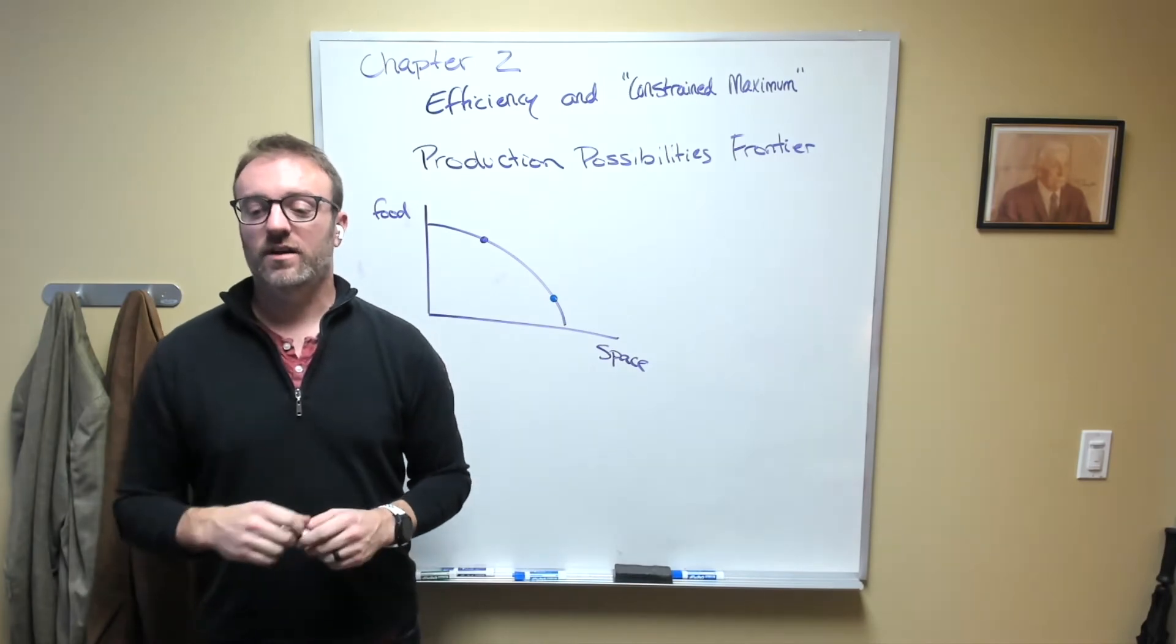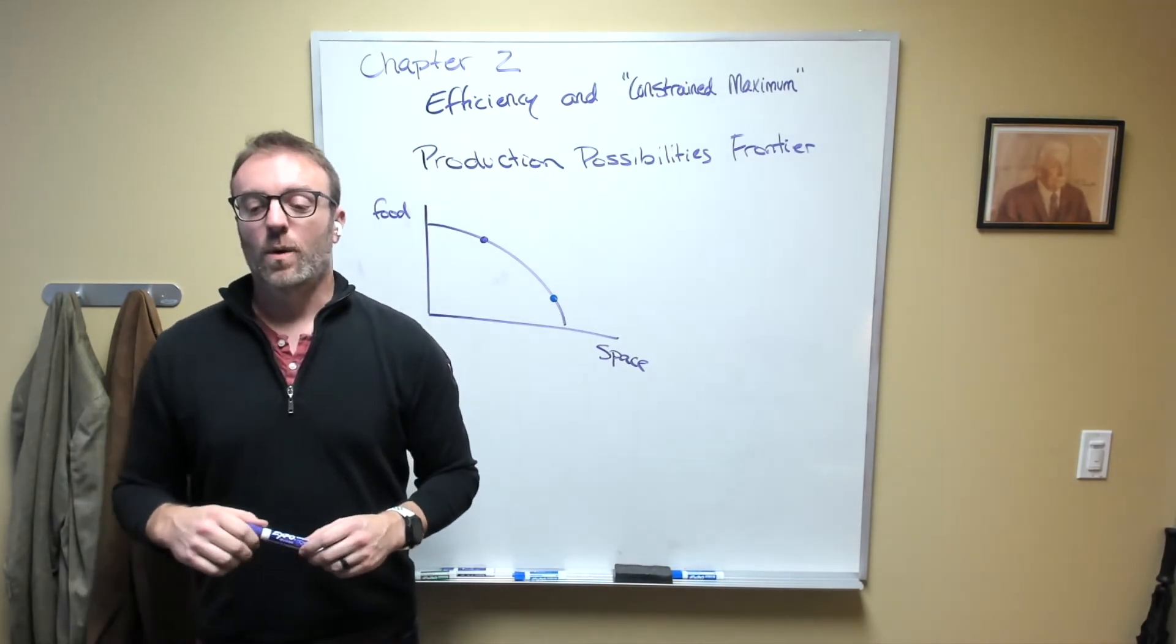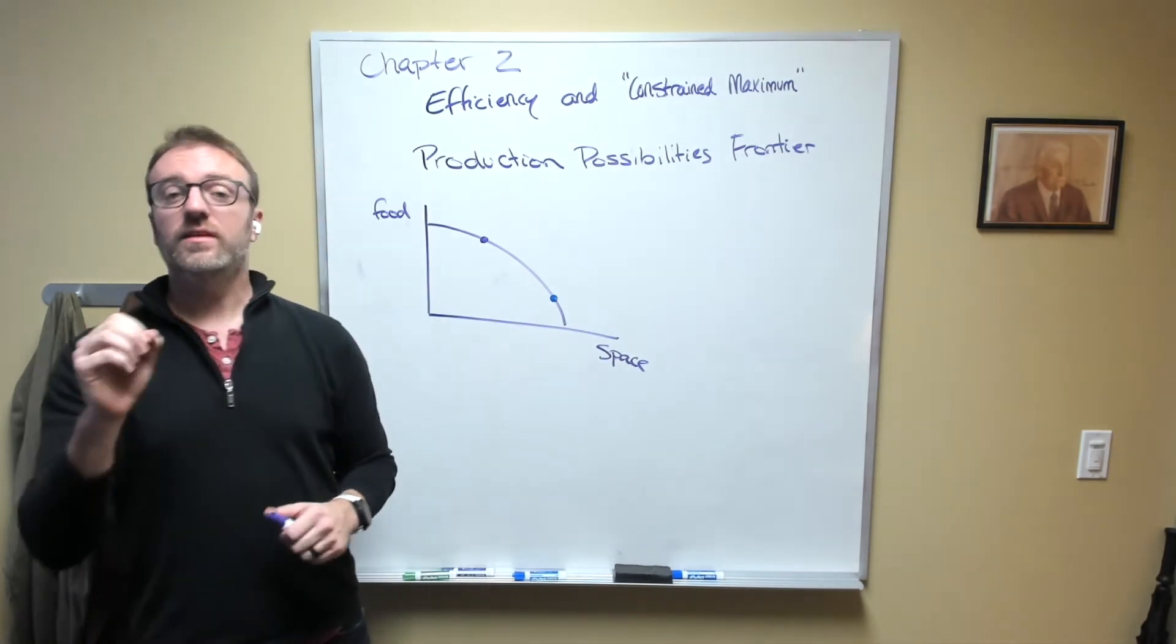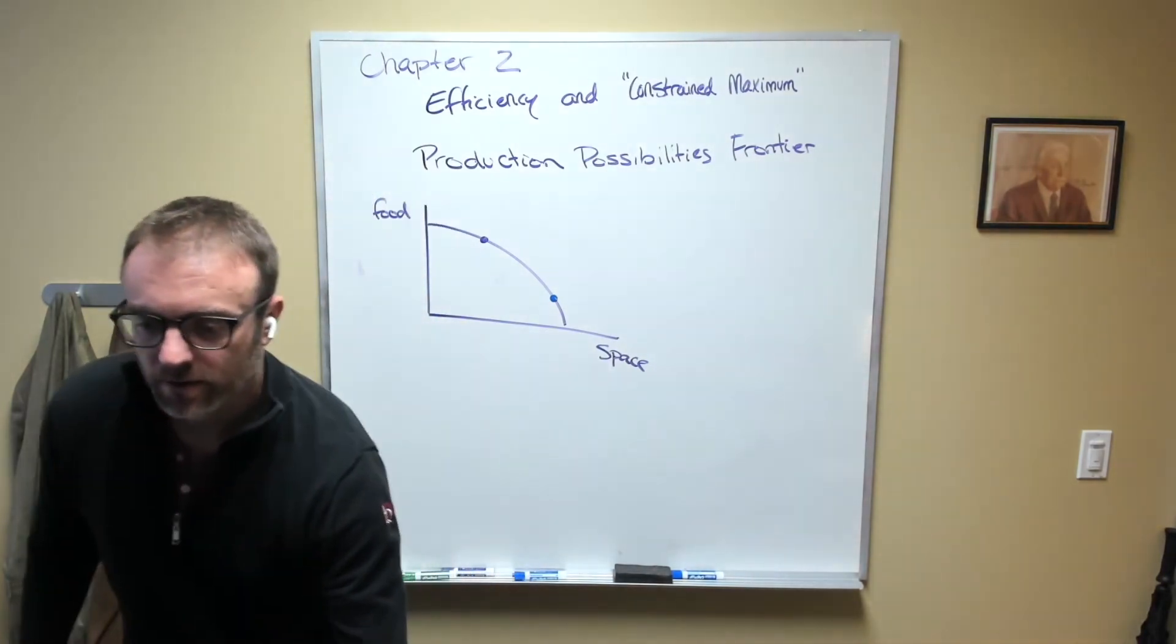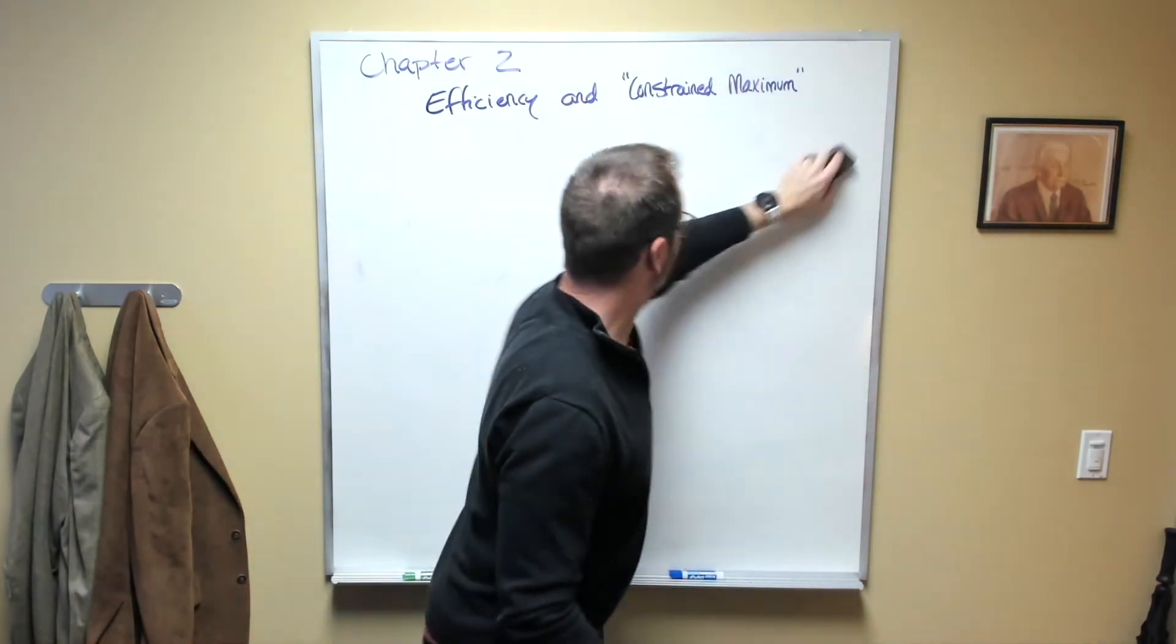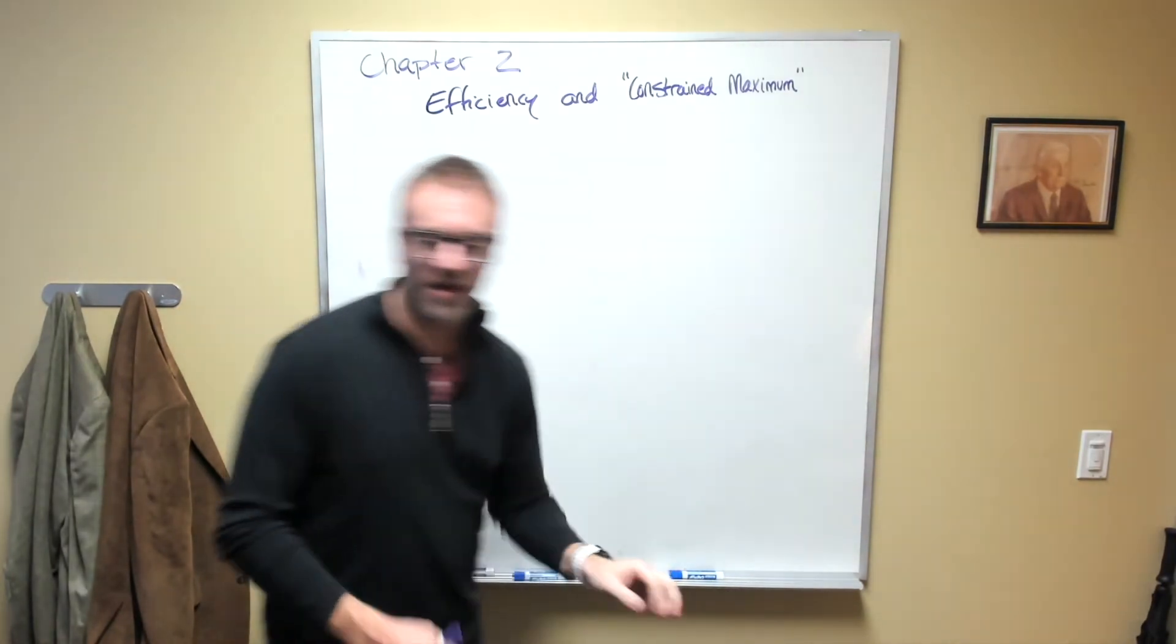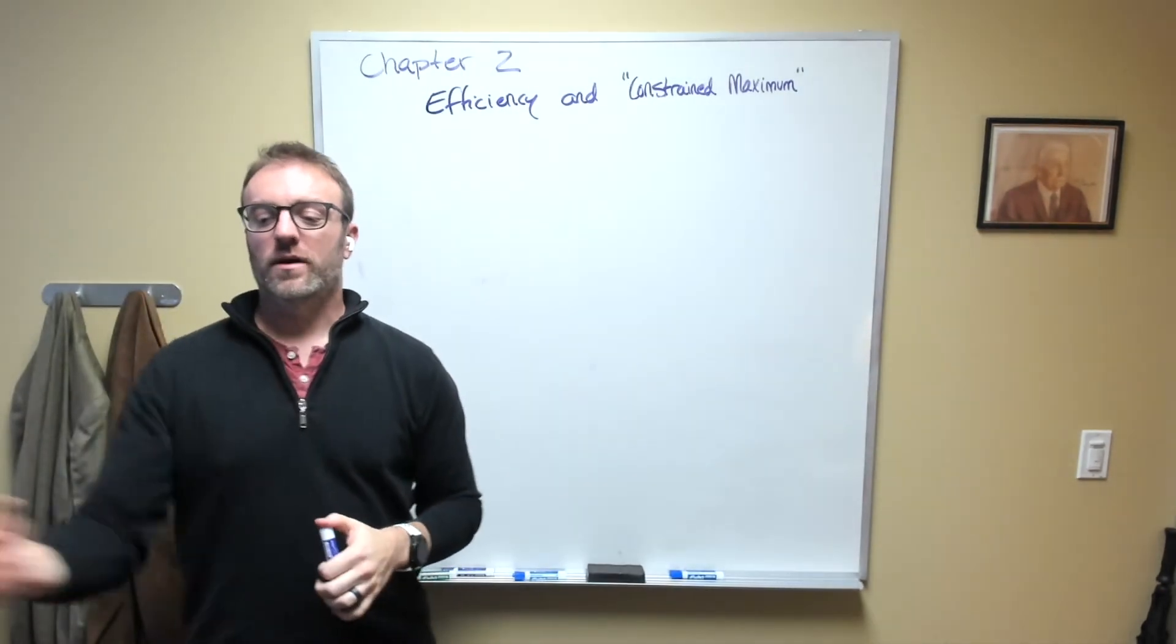The production possibilities frontier forces us to think about these trade-offs. Given how much medical care and housing we have, how much housing would we be willing to give up to have more medical care? And is that trade-off worth it? While this all may seem pretty straightforward, like all things in economics, there are differences in context and subjective values.